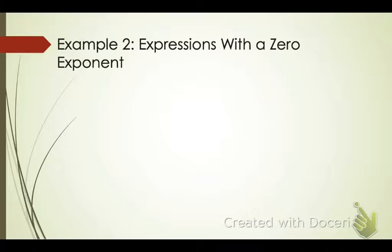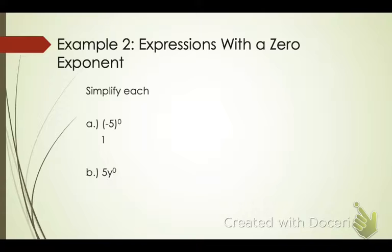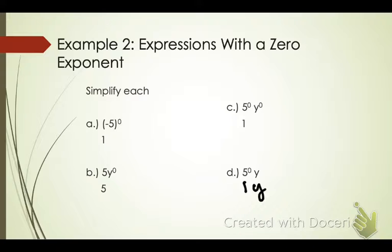Here's some more practice. Write this in your notebook. Example 2: expressions with a 0 exponent. We need to simplify each of the following. What if I have negative 5 to the 0 power? That equals 1. What if I have 5 times y to the 0 power? Well, y to the 0 power is 1, and 5 is still 5, so 5 times 1 is 5. What if I have both of them to the 0 power? They're both equal to 1, so my answer is 1. Last example: 5 to the 0 power is 1, and y is still y, so my answer is just y. Write those in your notebook. If you have questions, put that on the side — we're going to go over these tomorrow during class.